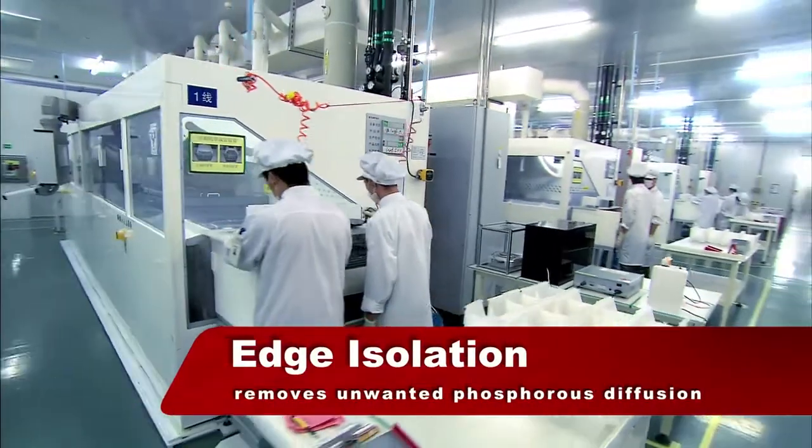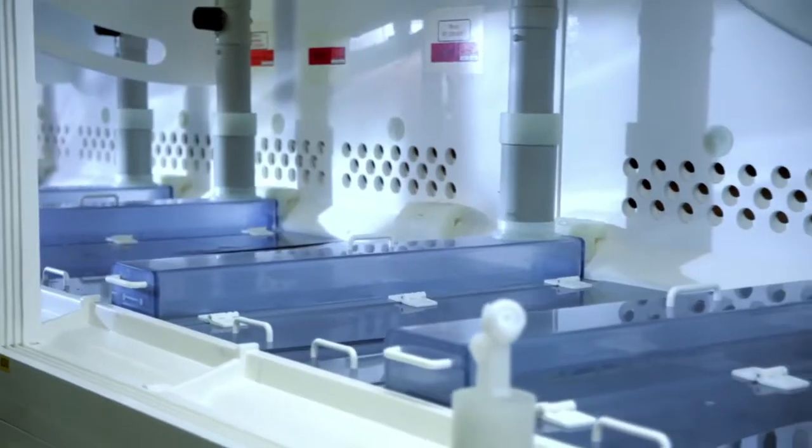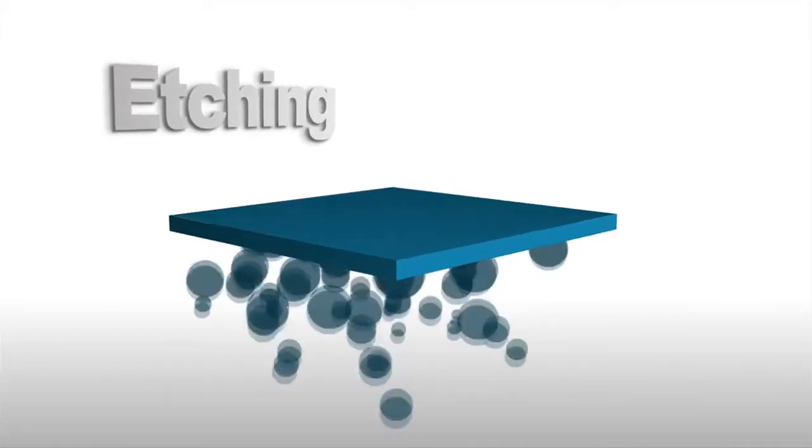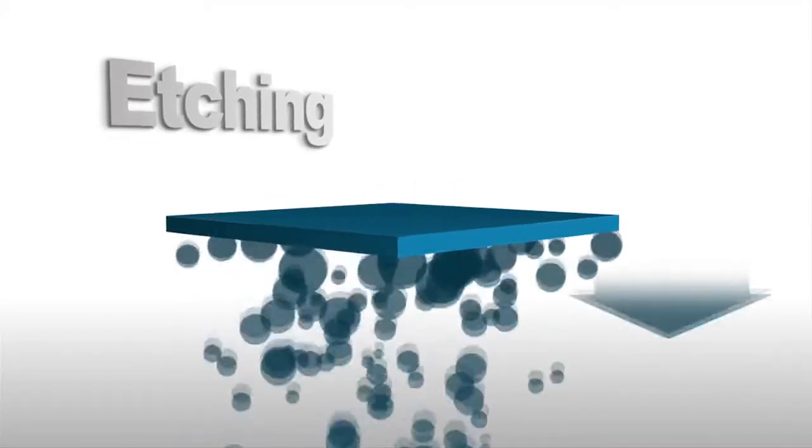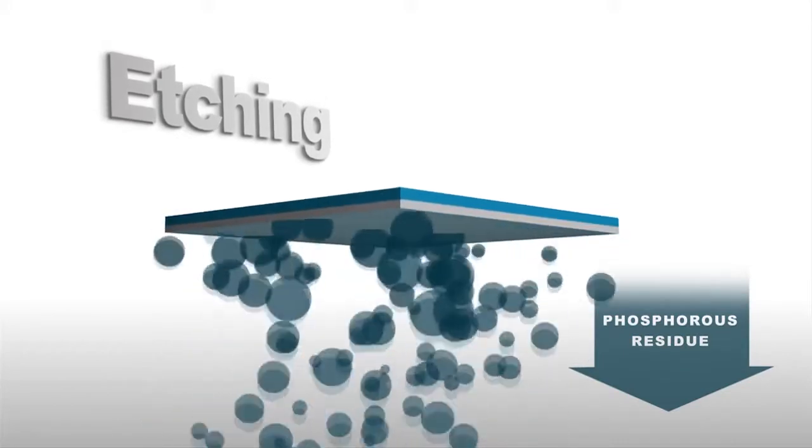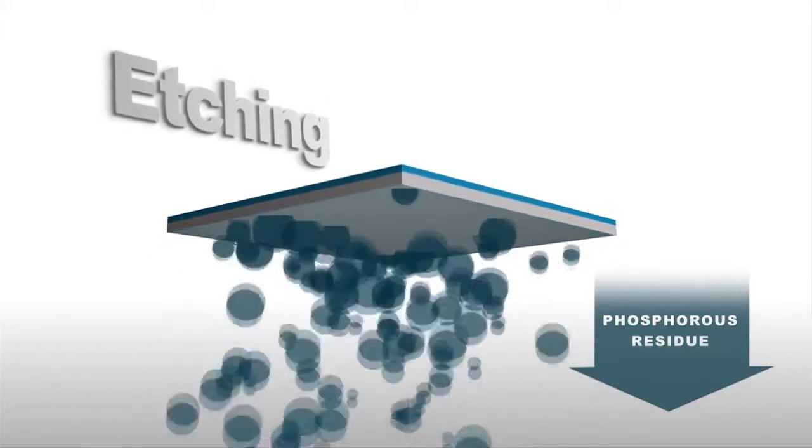Next, unwanted phosphorus diffusion is chemically removed from the edges and rear surface in another patented process. This unique process ensures the solar cells have excellent shunt resistances and higher efficiencies under low-light illumination.